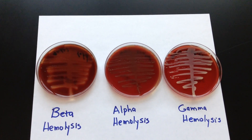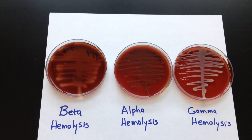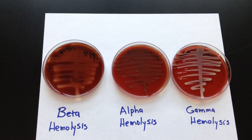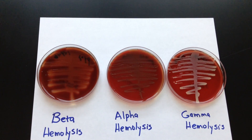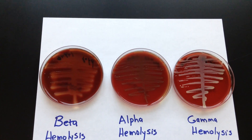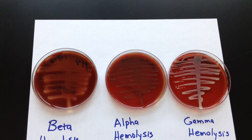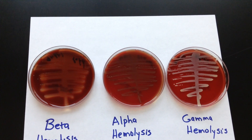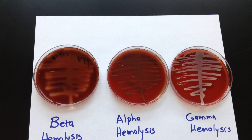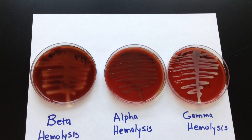This video outlines the TSA blood agar medium. This particular medium contains whole sheep red blood cells and is considered to be a differential medium, because although many organisms can grow, they produce different appearances on the medium depending on the types of enzymes they possess.